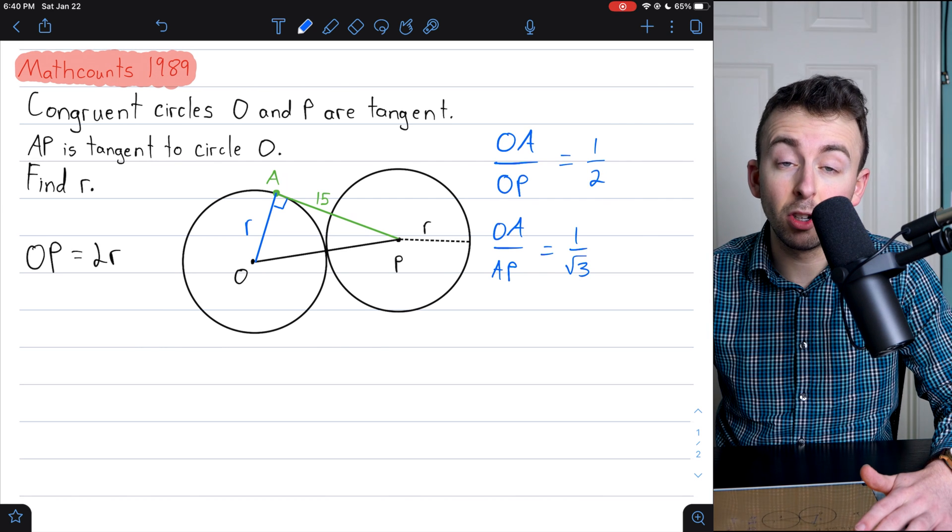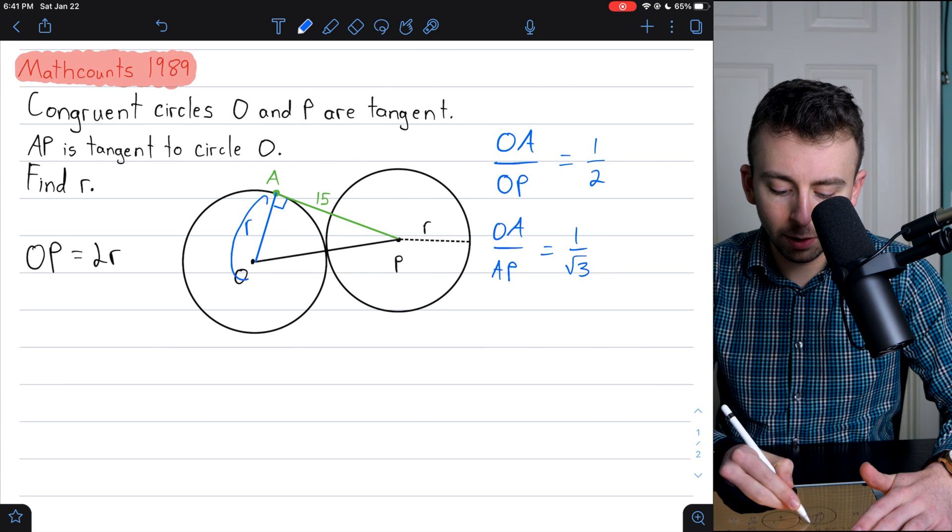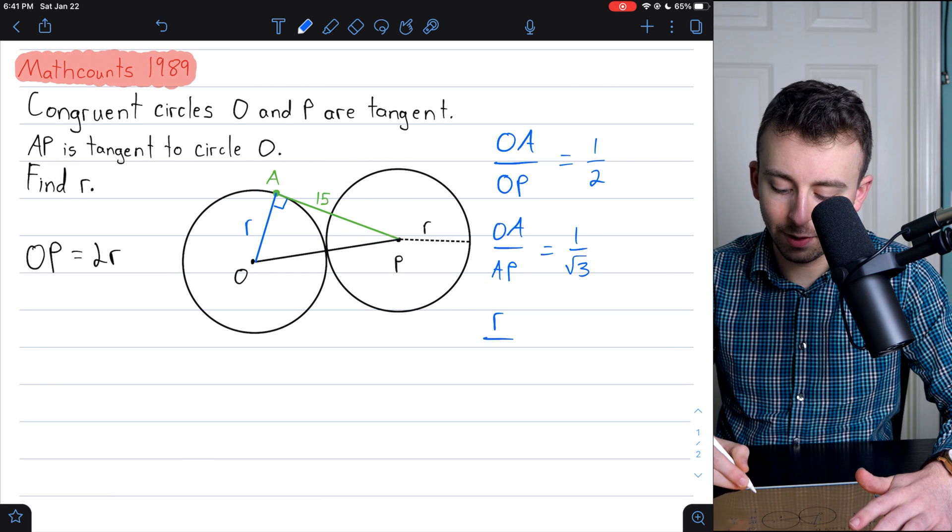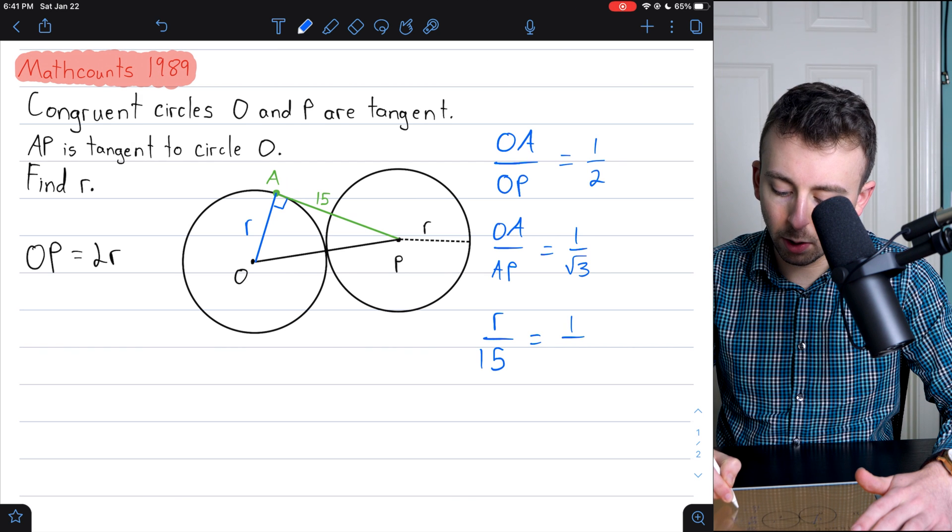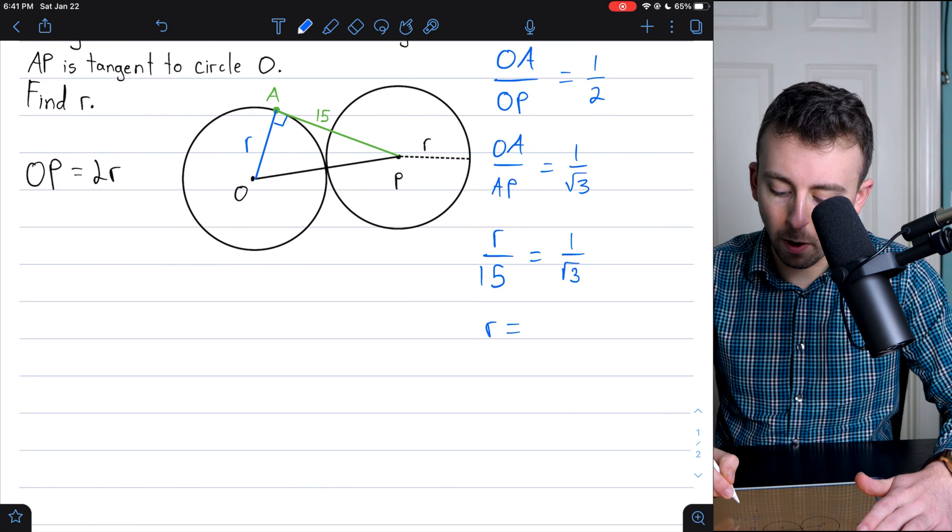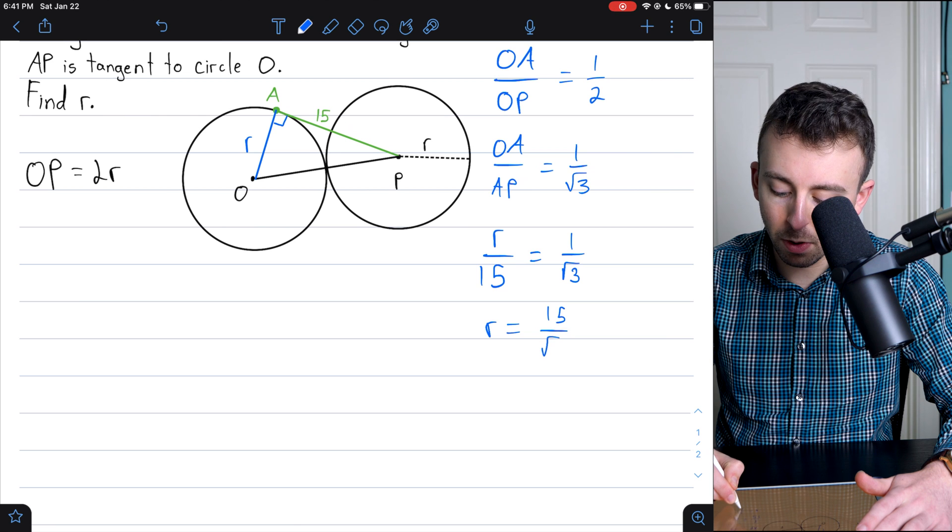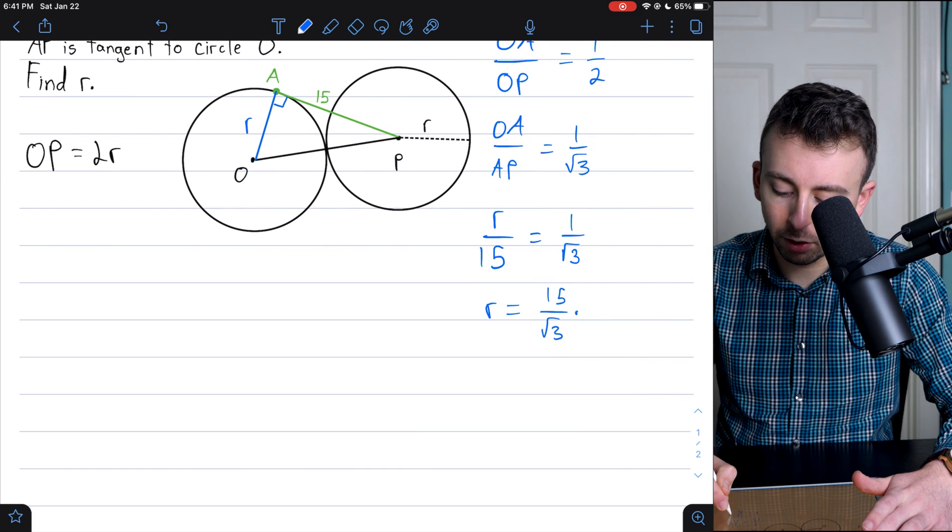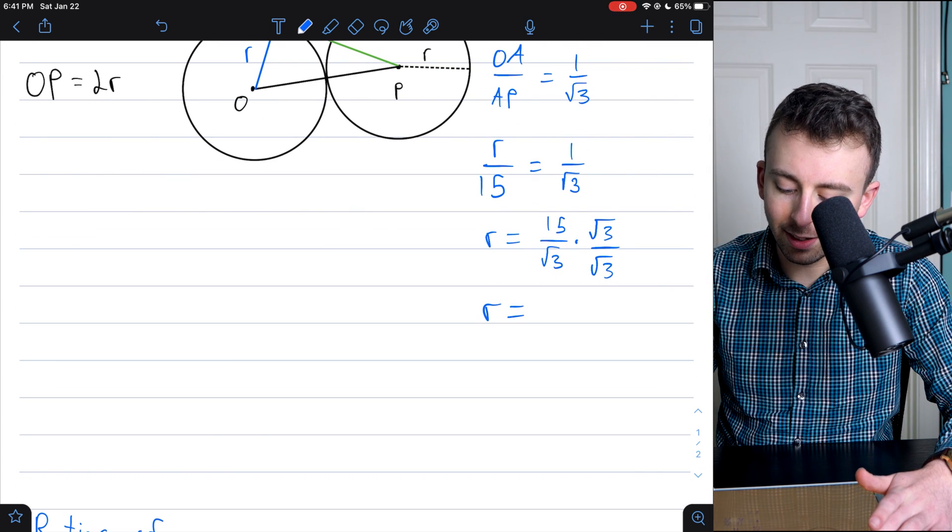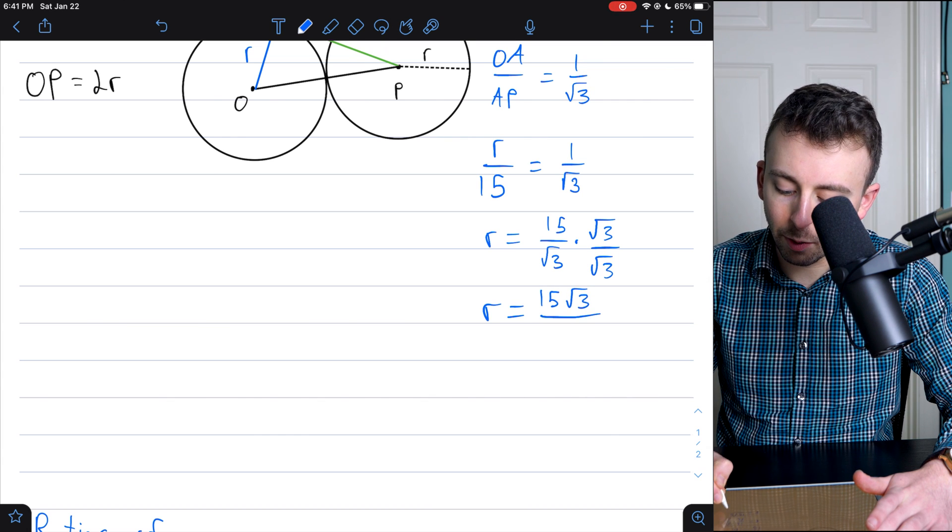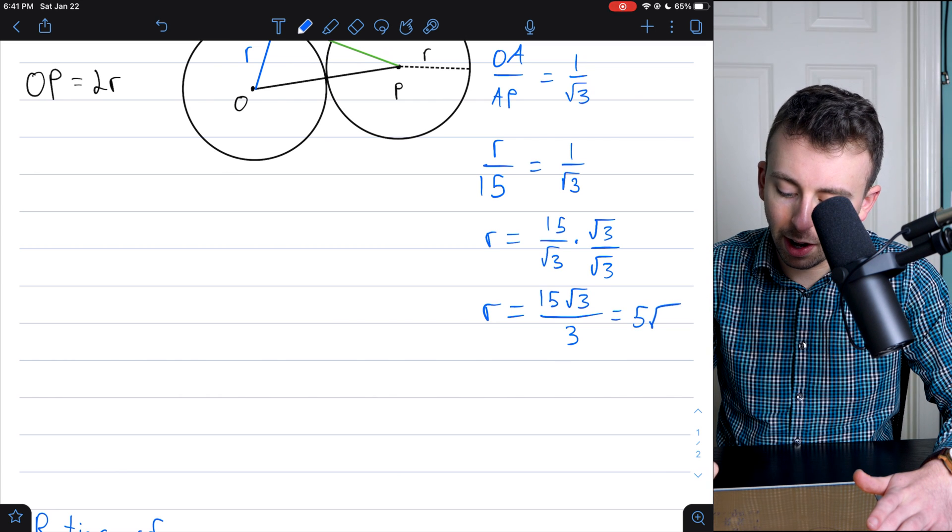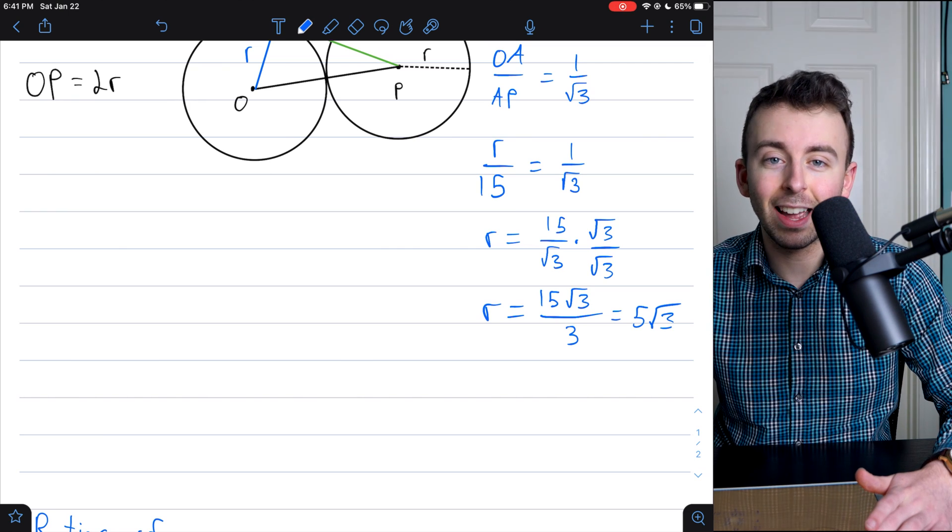So what I'm saying here is OA over this longer leg is equal to 1 over root 3. Then we just have to substitute some numbers in and solve for R. OA, of course, has a length of R. So we've got that R over AP has a length of 15. So R over 15 equals 1 over root 3. To solve for R, we just multiply everything by 15. So R is equal to 15 divided by root 3. And then we'll rationalize the denominator. So multiply by root 3 over root 3. And that's going to tell us that R is equal to 15 root 3 divided by 3 in the denominator. And then again, we see our familiar answer of 5 root 3 pop out. That's the second solution. Pretty cute.